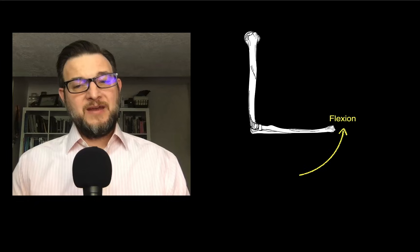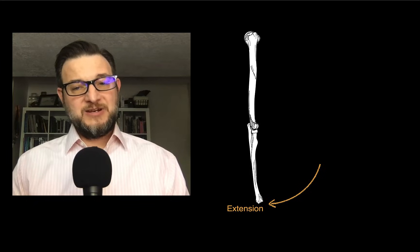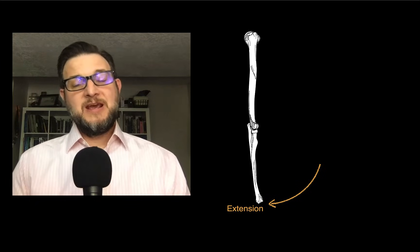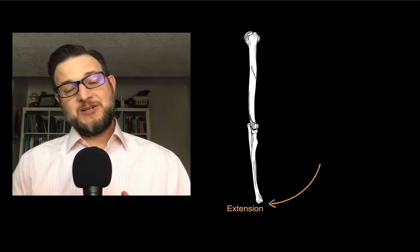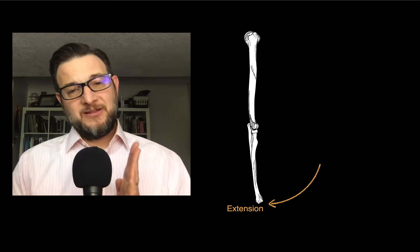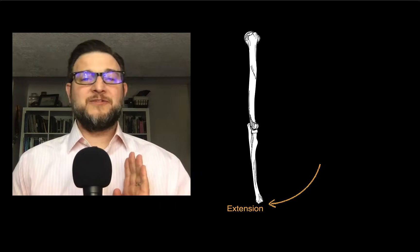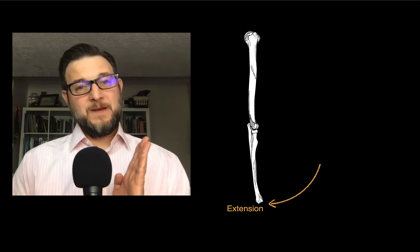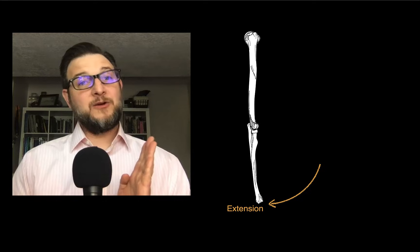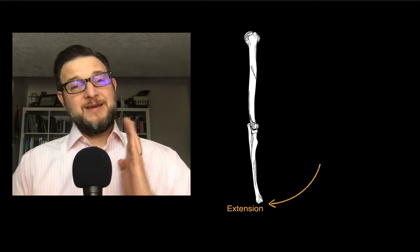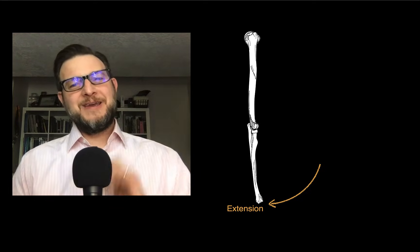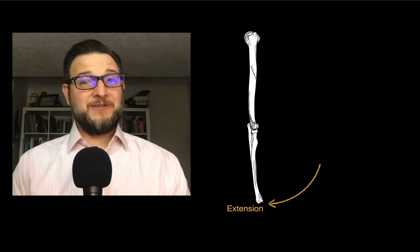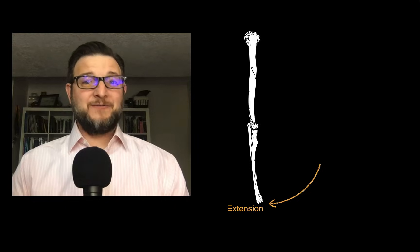That's where we get flexion and extension. When you go to full extension, the olecranon process prevents hyperextension — it goes snug as a bug in a rug into the olecranon fossa on the back of the humerus.